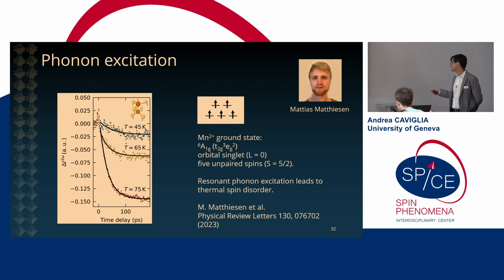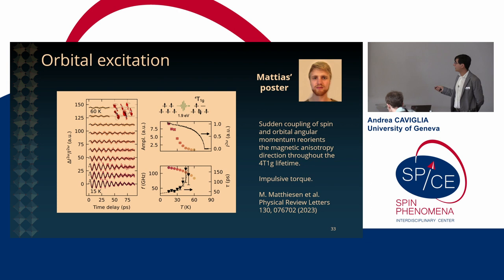However, in the same system you have orbital excitations that are accessible optically. So there is in particular at 1.9 electron volt a T4 to T1G excitation which creates suddenly the presence of a finite angular momentum in the orbital system. So when we do this experiment optically we have a sudden coupling of spin and orbital angular momentum and this is imparting a torque on the spin system and this leads to the appearance of large coherent oscillations of the magnetization. So if you would like to know more about these experiments please go to Matthias Poster this afternoon and I would be delighted to tell you more about it.